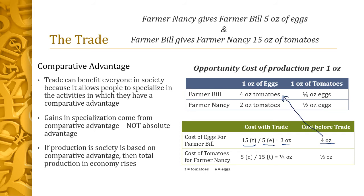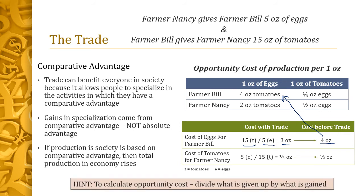In both cases, each farmer becomes better off with trade because they get more ounces of the other material. How trade is calculated will differ from person to person. Farmer Bill had to completely give up making eggs, while Farmer Nancy still grew some tomatoes but focused more on chickens. Remember: when calculating opportunity cost, divide what is given up by what is gained — that's where students often make mistakes.